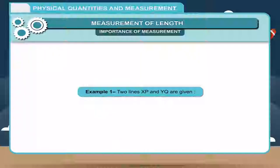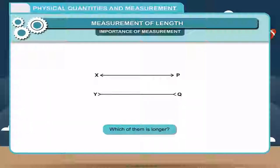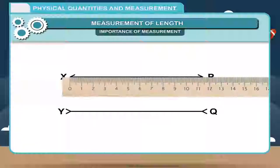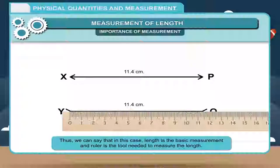Example 1: Two lines, XP and YQ, are given. Look at the two straight lines XP and YQ drawn alongside. Which of them is longer? You may guess that YQ appears to be shorter than XP, but when you measure with the help of a ruler, you find that both lines are equal in length. Thus, we can say that in this case, length is the basic measurement and ruler is the tool needed to measure the length.